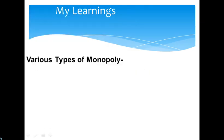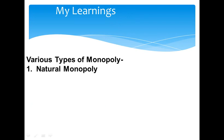Various types of monopoly arise under Natural Monopoly. Such a monopoly gets created by the grace of God. The places having abundant natural resources achieve this kind of monopoly. For example, oil is found abundantly in the Gulf countries and hence these countries have a natural monopoly of oil.